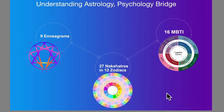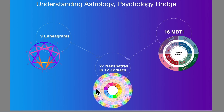Hello and welcome to Understanding Astrology and Psychology Bridge Series. In these series of videos, we are going to uncover the hidden layers between understanding the nine enneagrams in the enneagram system of psychological evaluation, which has got nine basic archetypes, bridging with the 27 nakshatras in the 12 zodiac signs of Vedic astrology. We shall also borrow from the 16 Myers-Briggs type indicators of personality. So we'll basically bring in the enneagrams as well as MBTI models into the 27 nakshatras.